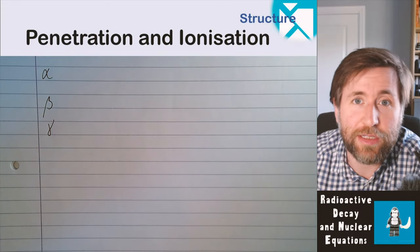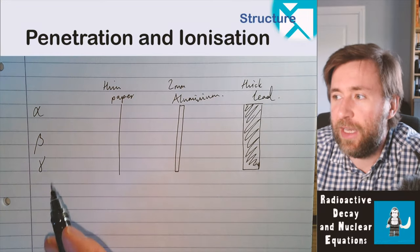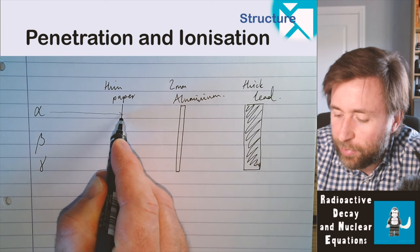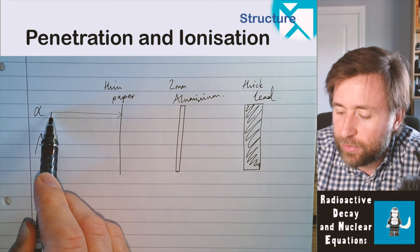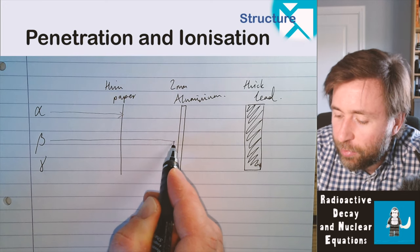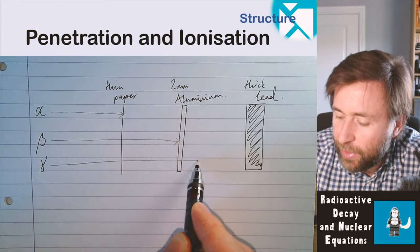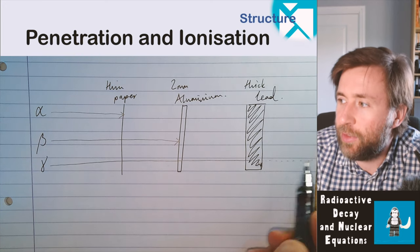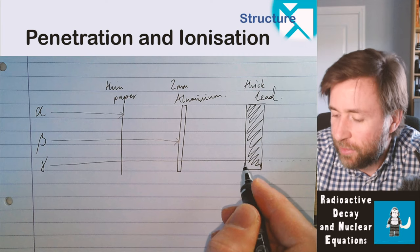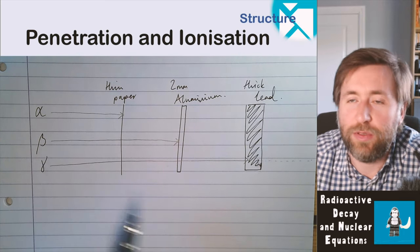Here's a diagram you'll see a lot in textbooks showing the penetration of alpha, beta, and gamma. Alpha is stopped by thin paper. Beta goes through the thin paper but is stopped by two millimeters of aluminum. Gamma goes through both the paper and the aluminum, and most of it even passes through lead — though the lead does attenuate it, reducing the signal strength. Most of the gamma is stopped by thick lead, but not all of it.